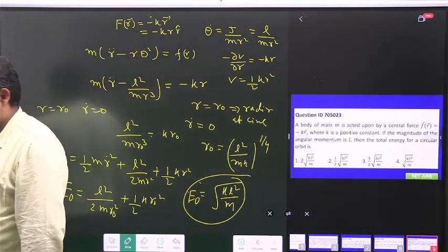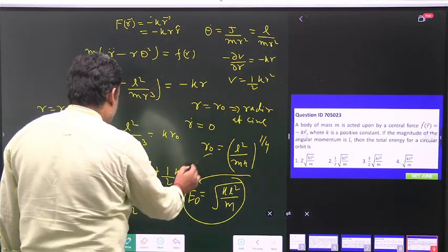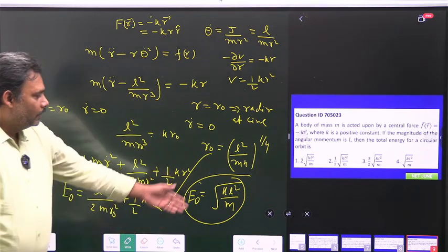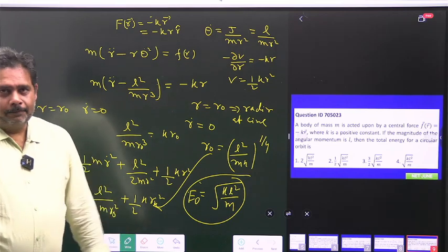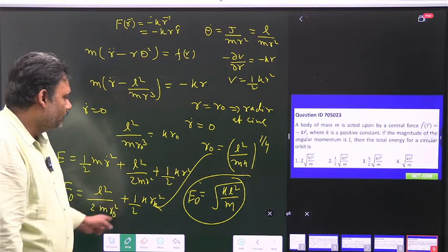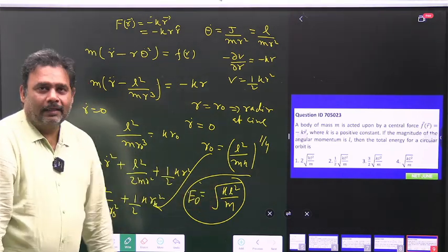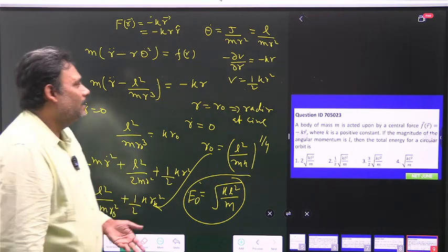This will be your answer. Put the value of r naught here and you will get E naught is equal to kl square by m. So the value of these two will be the same, but half half is there and you will get kl square by m. So this is straightforward.